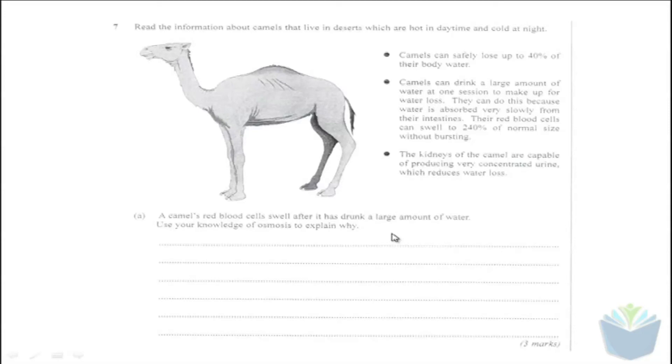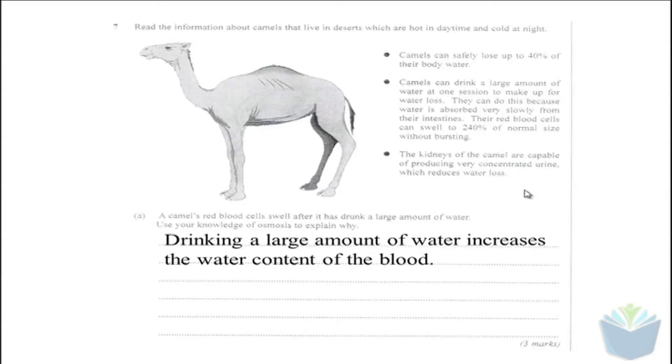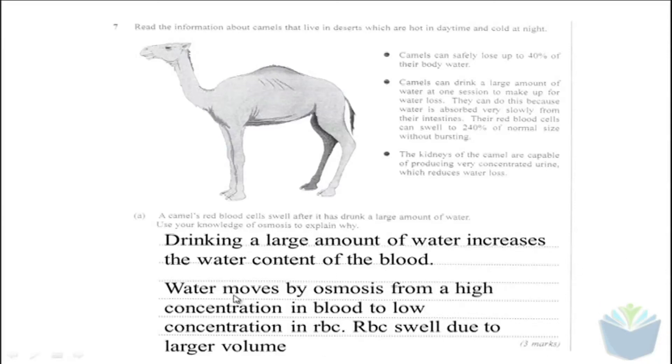So the question is asking you to use your knowledge and understanding of osmosis to explain why the red blood cells of the camels swell after drinking large amounts of water. This question is worth three marks, so they're looking for three points. The first point I would note is drinking a large amount of water increases the water content of the blood. The other two marks should come by talking about water moving from an area of high concentration to an area of low concentration, which would be within the RBC, which is just shorthand for red blood cell. The final mark comes by stating that the red blood cell swells due to its larger volume.